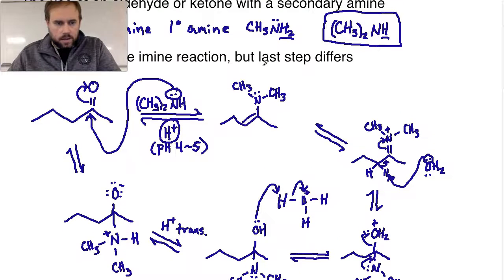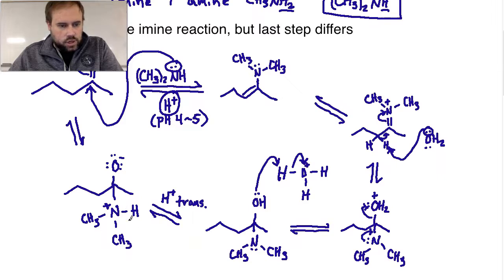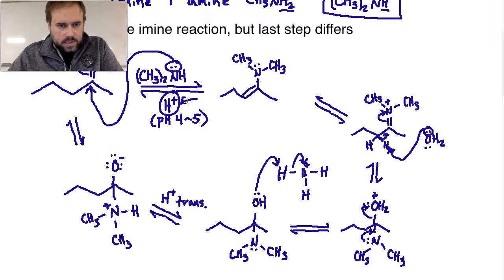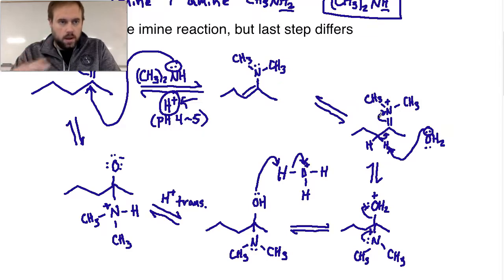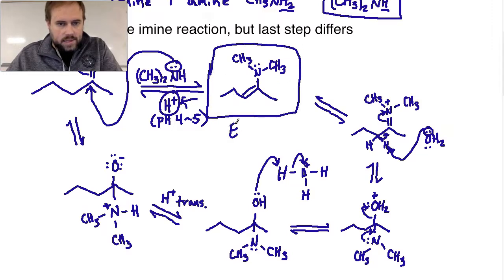So that is the full enamine formation reaction. To recap: we start with the ketone, the nucleophile comes in and opens up the carbonyl, then we get the proton transfer to make the alcohol and the neutral nitrogen. After that, the alcohol is turned into water from the acid, water makes a good leaving group, the nitrogen sends its lone pair in to create a double bond, and then — because there's no hydrogen on the nitrogen — we take a hydrogen from a neighboring carbon. Those electrons go back to form a carbon-carbon double bond, the pi electrons between carbon and nitrogen are sent back to the nitrogen to remove its formal charge, and the final product is the enamine: a carbon-carbon double bond adjacent to the nitrogen with its two CH3 groups.